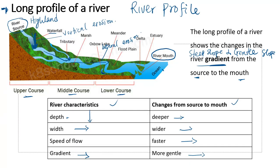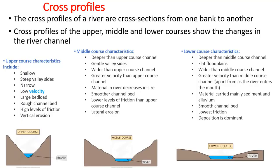Now, the cross profile. When you pick a point on the river — say the lower course — and look at how it appears across the width of the river between two banks from point A to B, that is the cross profile. Cross profiles of the upper, middle, and lower course are cross sections from one bank to another and show changes in the river channel.